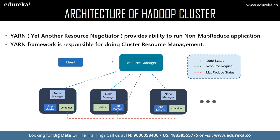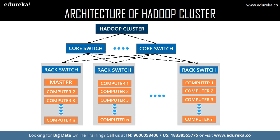Now let us discuss YARN — Yet Another Resource Negotiator. YARN consists of the following elements: node manager, app master, and container. The node manager is a Java utility that runs as a separate process from the web logic server. It allows you to perform common operations for a managed server regardless of its location with respect to the administration server. The app master is responsible for negotiating resources between the resource manager and node manager. The container is a collection of reserved resources allocated from the resource manager to work on the task assigned by the node manager.